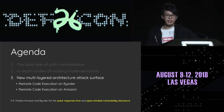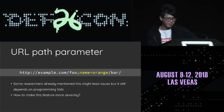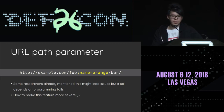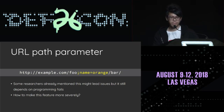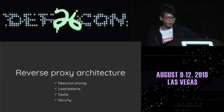I would like to thank Amazon and Vindler for their open-minded vulnerability disclosure and quick response time. We start with an HTTP feature: URL path parameters. They can define information to a specified path segment. Some researchers have already pointed out this feature may lead to security problems, but their concerns still depend on programming errors. When I saw this, I was thinking about how to make this feature more severe. And I found: reverse proxy. Reverse proxy is a common web architecture with several benefits: resource sharing, load balancing, caching, and security.